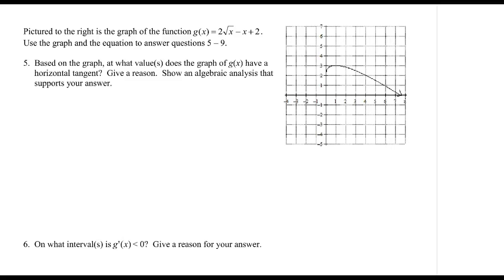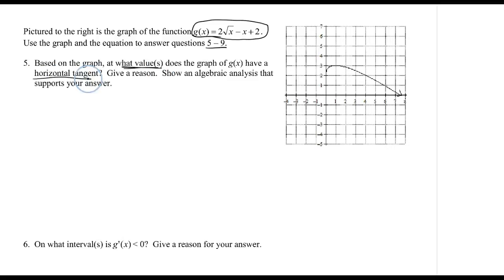On our next page, we're given the graph of g of x equals 2 radical x minus x plus 2, and we'll use this for questions 5 through 9. Our first question asks at what values does the graph have a horizontal tangent.